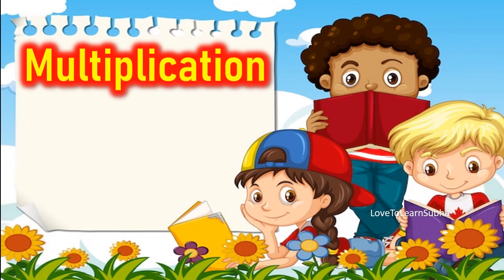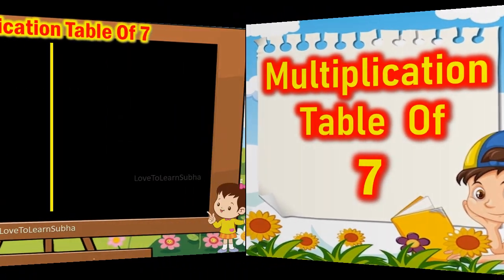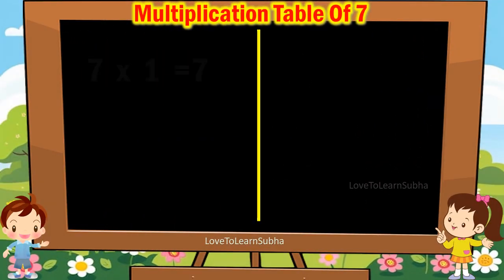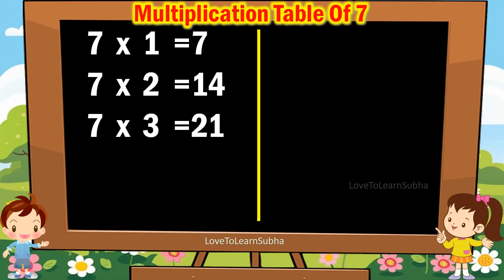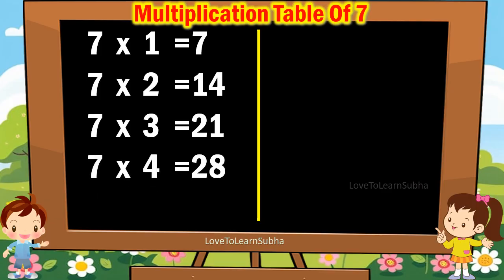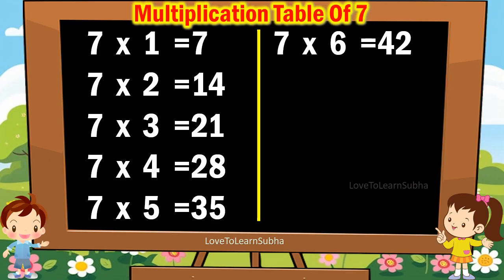Multiplication table of 7. 7 1s are 7. 7 2s are 14. 7 3s are 21. 7 4s are 28. 7 5s are 35. 7 6s are 42.